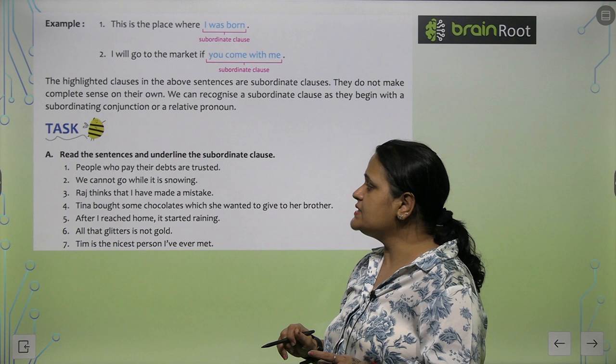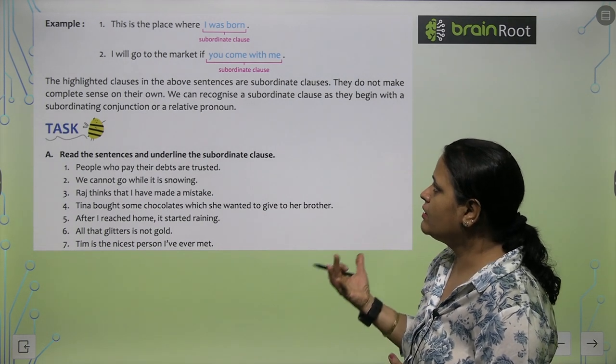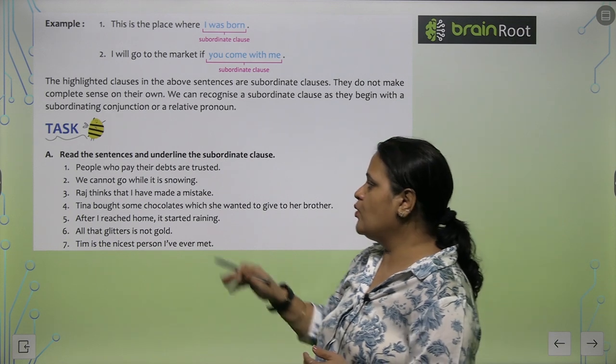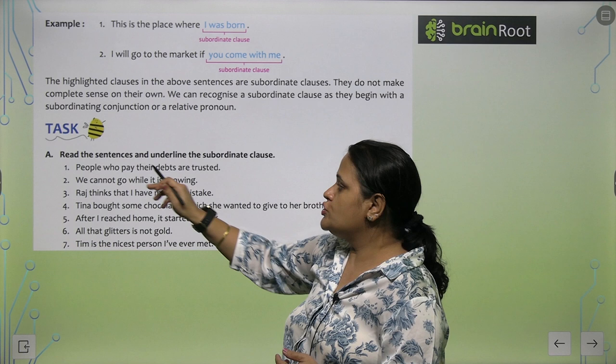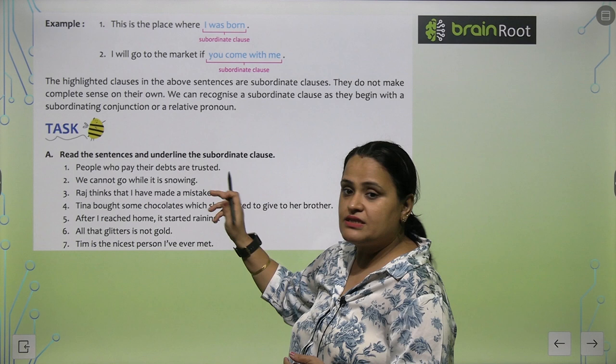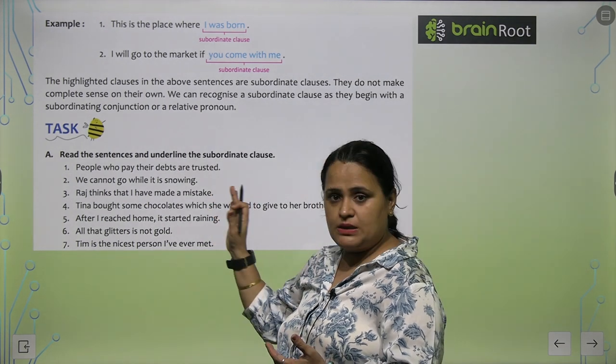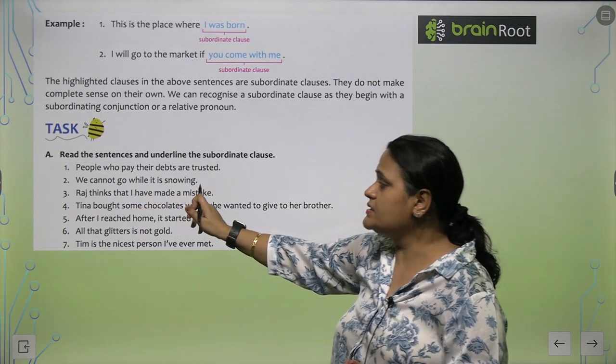So, now we do the exercise. Read the sentences and underline the subordinate clause. First, people who pay their debts are trusted. So, people who pay their debts are trusted. Are trusted is the subordinated clause. We cannot go while it is snowing. While it is snowing here is the subordinated clause.